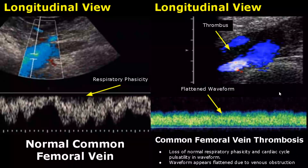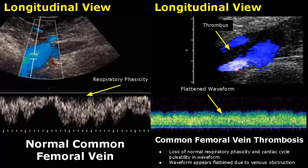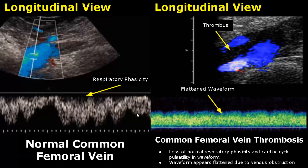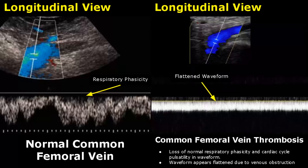The spectral Doppler waveform in cases of thrombosis will have a flattened presentation. There is loss of normal respiratory phasicity and cardiac cycle pulsatility, which is seen in the normal waveform of the common femoral vein. Here is another image showing a flattened waveform due to venous obstruction caused by deep vein thrombosis.